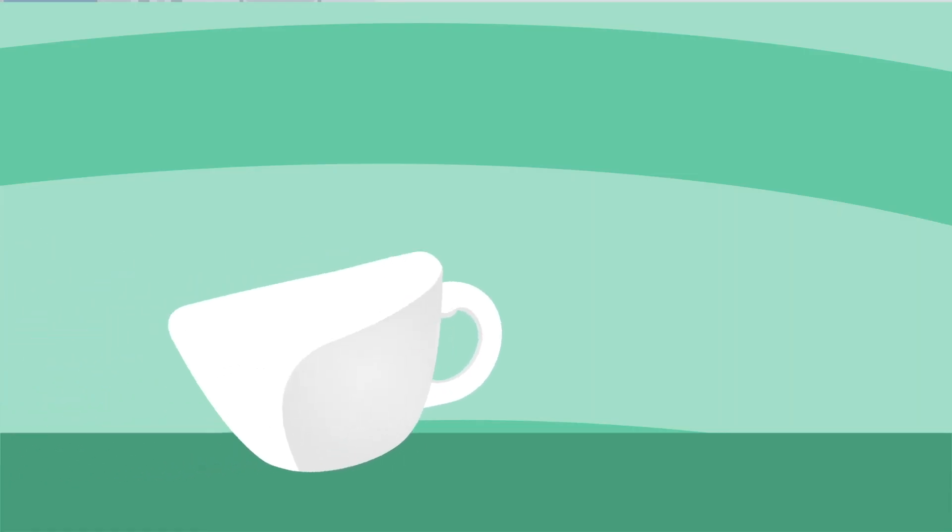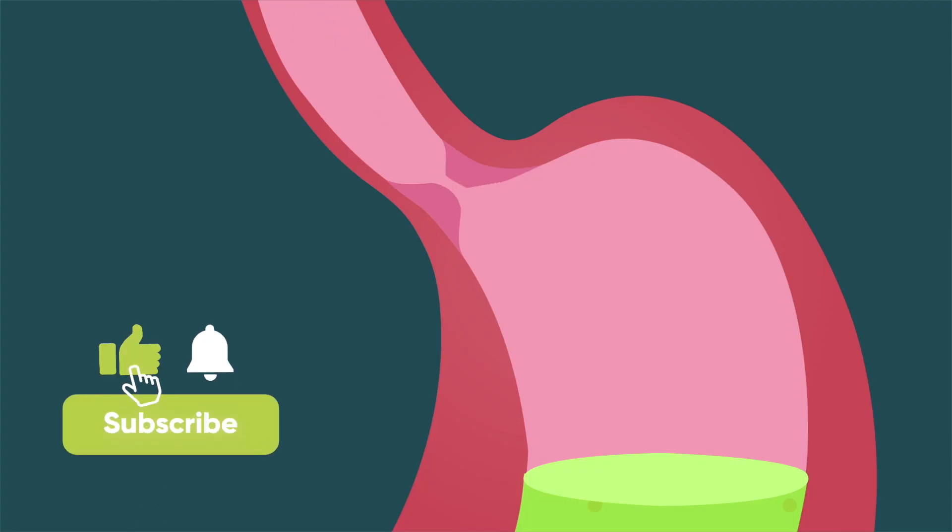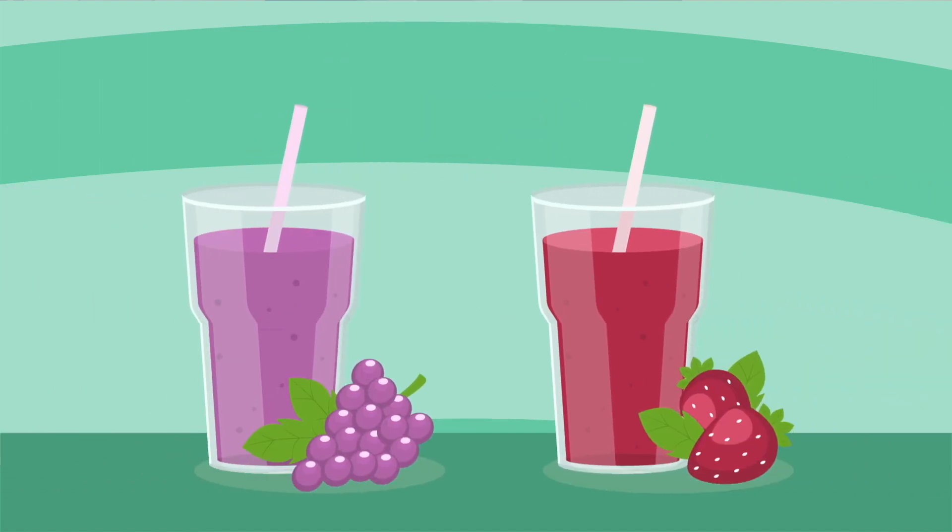Also, cut down on the use of caffeinated drinks like coffee, tea, and soft drinks. Caffeine relaxes the stomach entry muscle and increases reflux. Especially avoid use of caffeine in the evening, six to eight hours before bedtime. You can drink caffeine-free drinks instead.